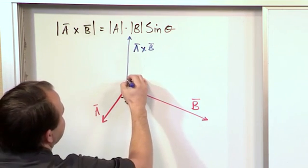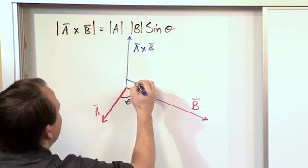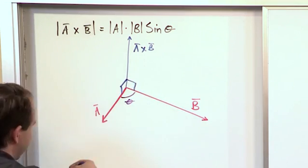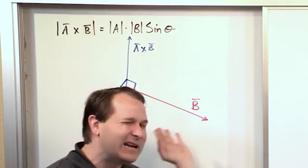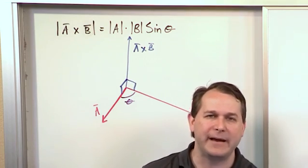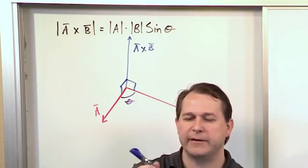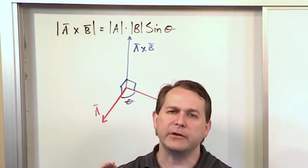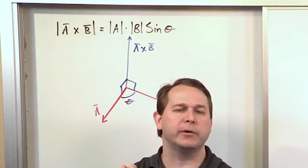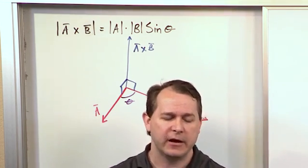But the interesting thing is, for the cross product, the cross product is always perpendicular to the other two vectors. So that's kind of hard to see in a chalkboard, or in a marker board. Basically, if you have a vector pointed this way and a vector pointed this way, the cross product is always going to be perpendicular to both of those vectors.